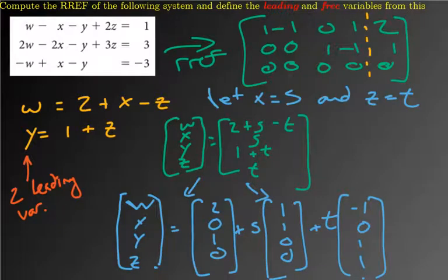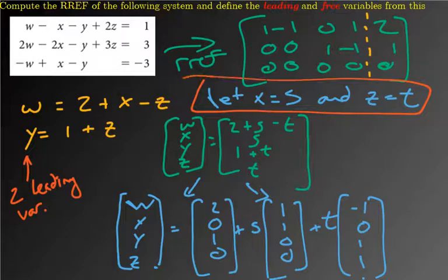And the last thing I just want to define, so we talked about these leading variables, but the reason, so these two, the X and the Z are the free variables. X and Z are free.